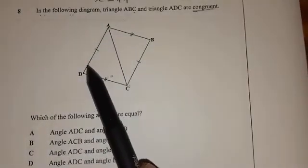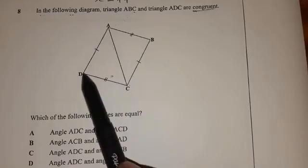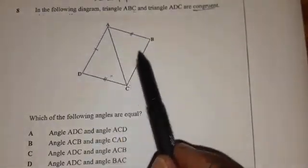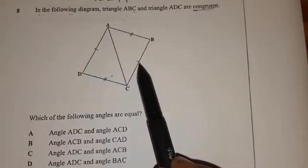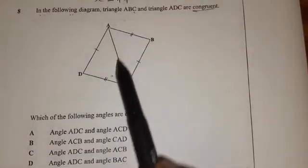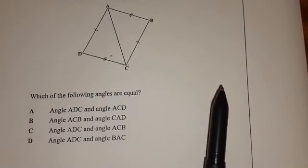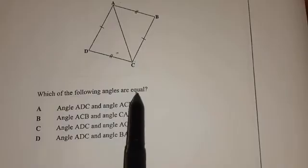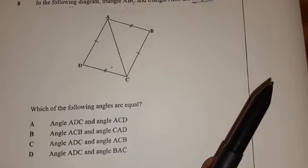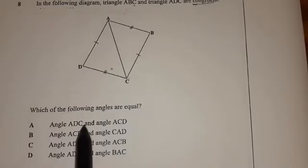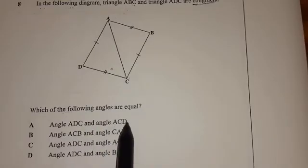You can even see that this side is equal to that side. Then this side is equal to this side. That's why they have put one here, one here, two there, two here. Now they are saying, which of the following angles are equal? Angle ADC and angle ACD.